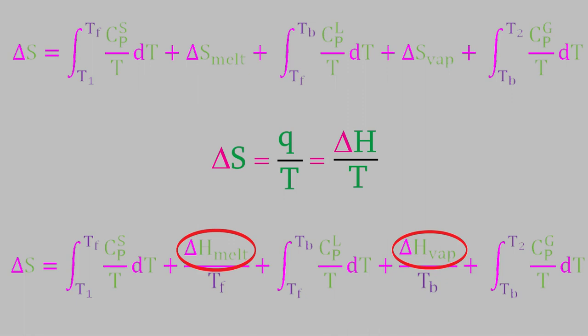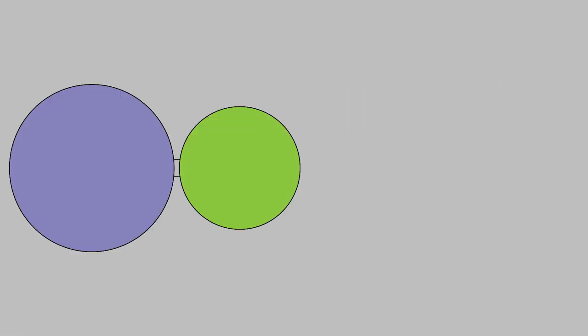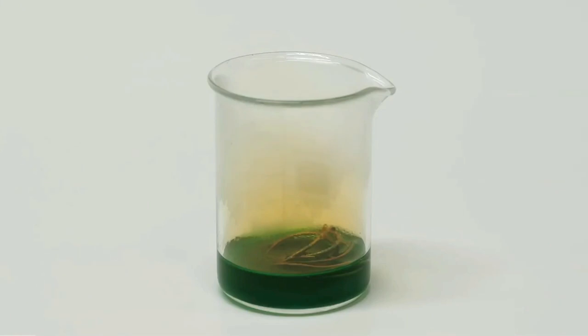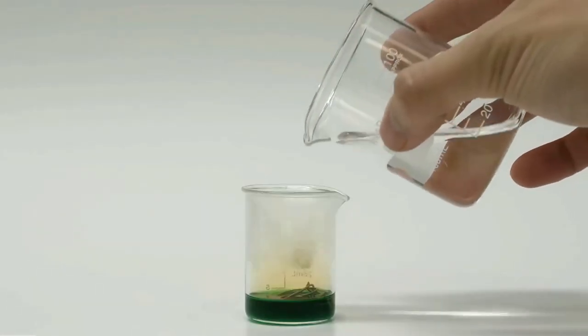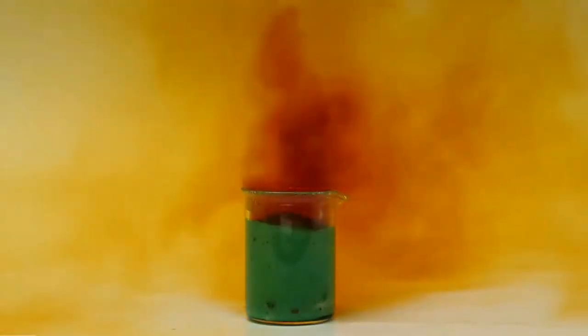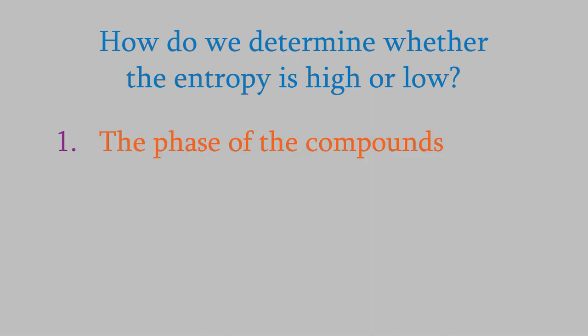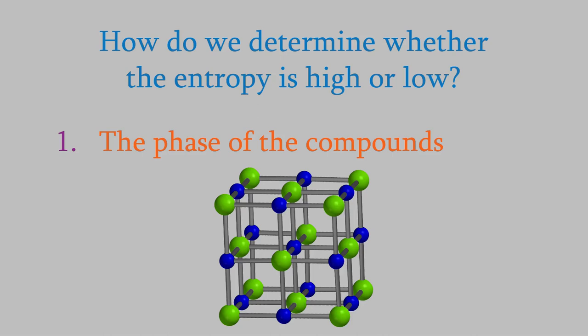So far, we've just looked at the entropy of simple changes, for example, the mixing of two gases, or the change in temperature and phase for a simple compound. But what about chemical reactions? In a reaction, we have one or more compounds that are transformed into completely different compounds. How can we determine the entropy change in those cases? Well, let's remember that entropy is a measure of how disordered a system is. It turns out there are several ways to tell whether chemicals have a high or a low entropy. The most important way has to do with the phase of the chemicals.